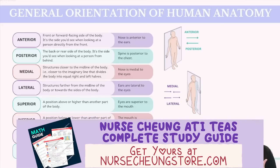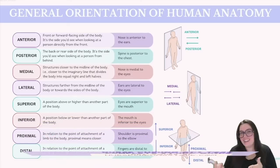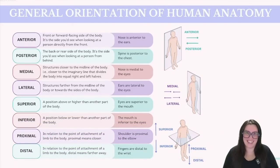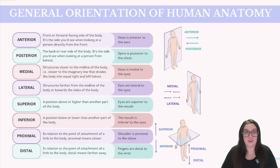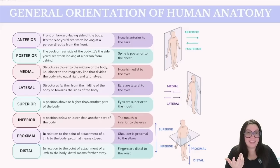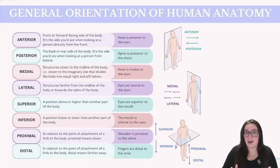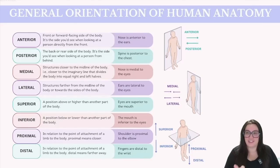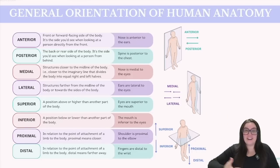The ATITs loves to test you on anatomical positions of different body parts, using terms like anterior, posterior, medial, and lateral. Anterior is the front or forward-facing side of the body — a good example is that the nose is anterior to the ear. Posterior is the complete opposite — it's the back or rear side of the body. So we could say the spine is posterior to the chest.